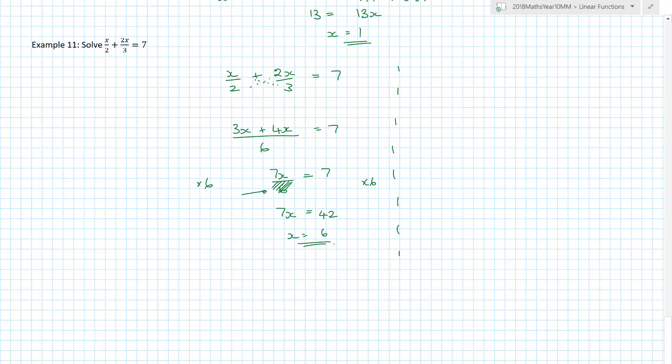That is certainly one way of doing it. In this situation, it was nice, beautiful, easy numbers. But later on, it might get quite tricky. How would I have done this? I'm not saying it's any quicker, but x over 2 plus 2x on 3 equals 7. I actually get rid of that divide by 2 first. I want to get rid of this, so I'm going to multiply absolutely everything by 2.